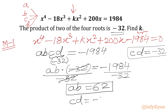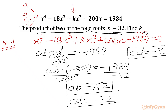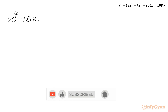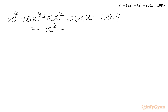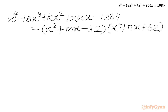So a times b is 62 and c times d is minus 32. Now we are going to express our quartic expression as a product of two quadratics. The quartic x^4 minus 18x^3 plus kx^2 plus 200x minus 1984 can be written as (x^2 + mx minus 32)(x^2 + nx + 62). Multiplying both brackets gives a constant of minus 1984, which is correct.